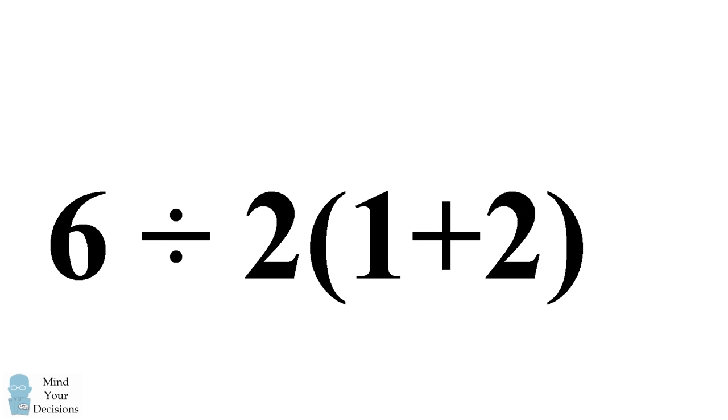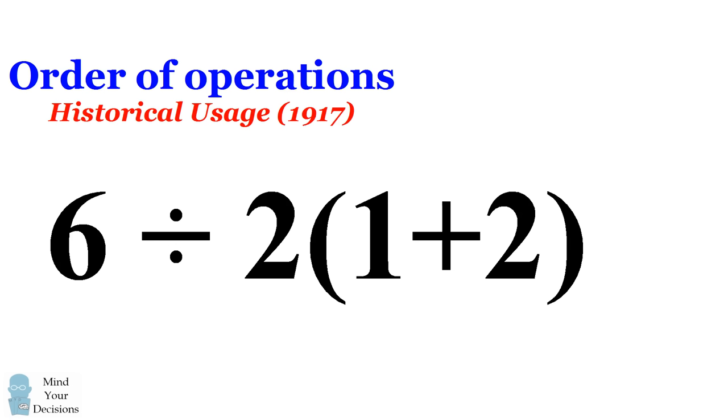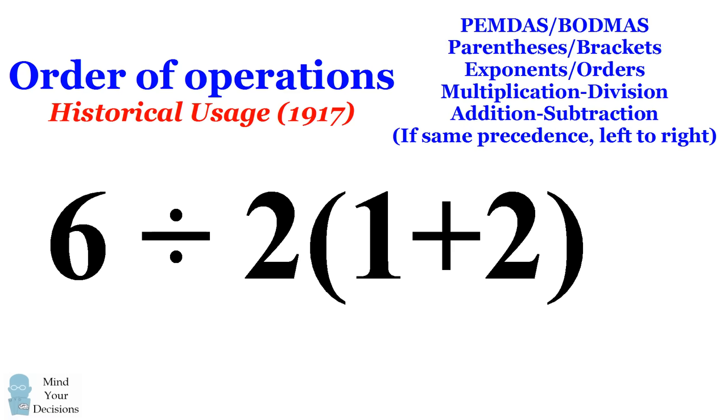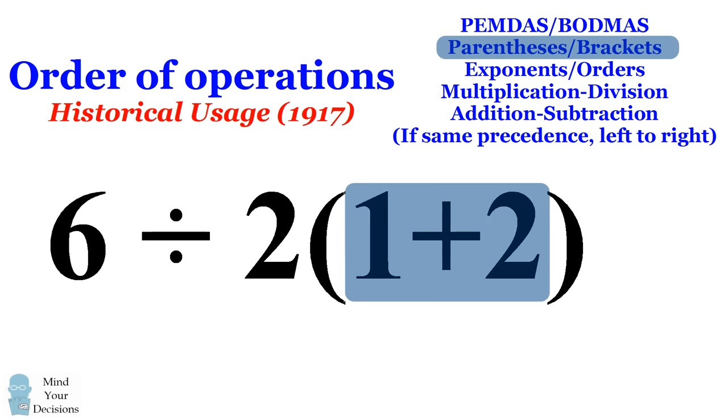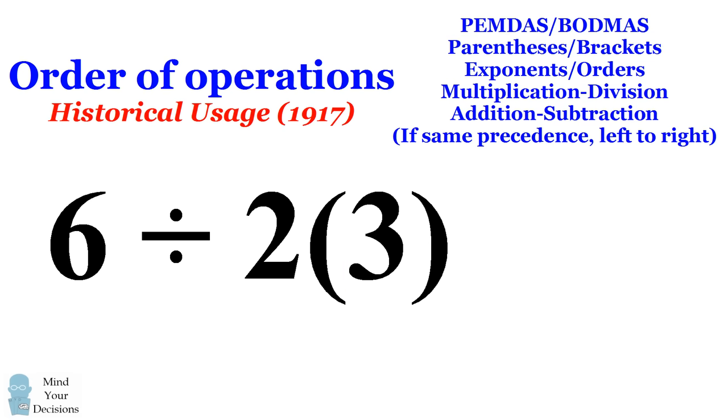Well there is another answer that you could argue from a historical perspective. I actually found some documentation that the order of operations did have a slightly different understanding in certain texts in 1917 or before. So the first part of the equation is the same as before. We have a parenthetical expression and this should be evaluated first. We have 1 plus 2 and that becomes 3.